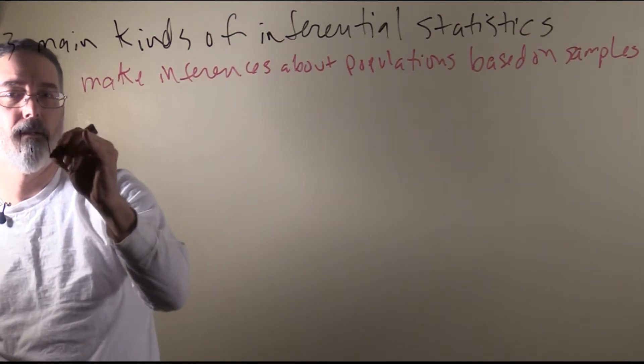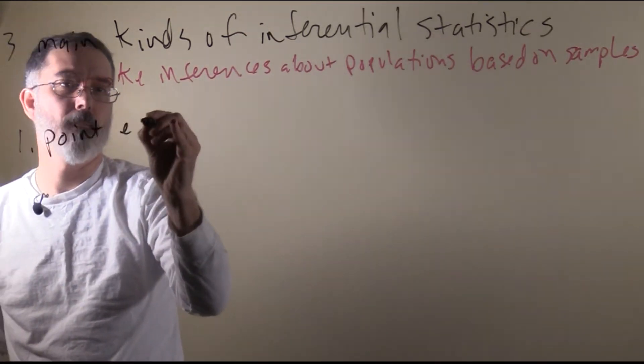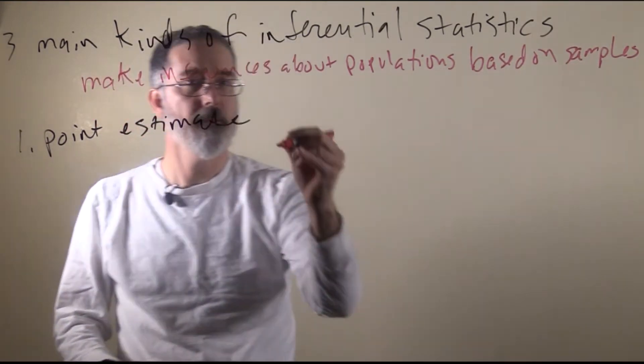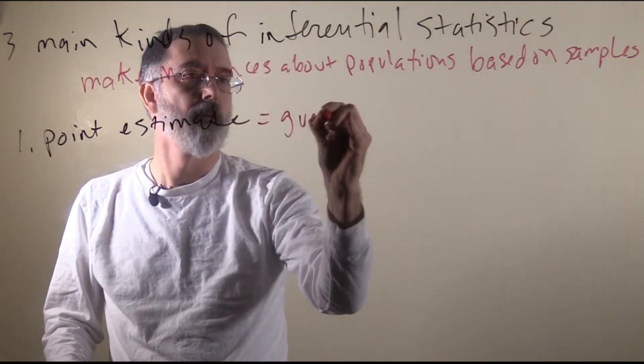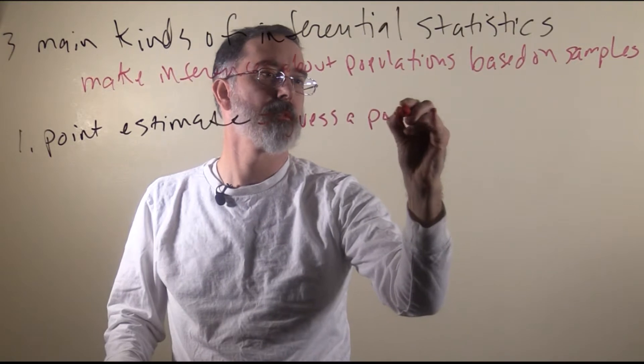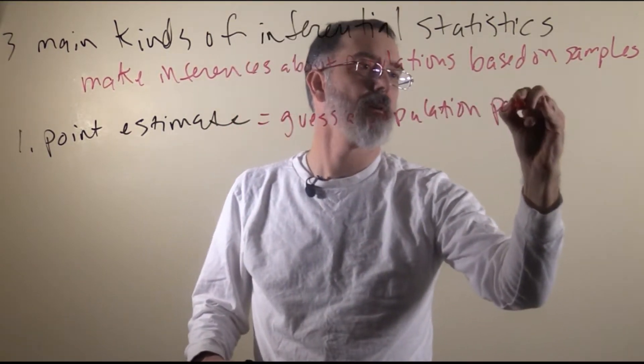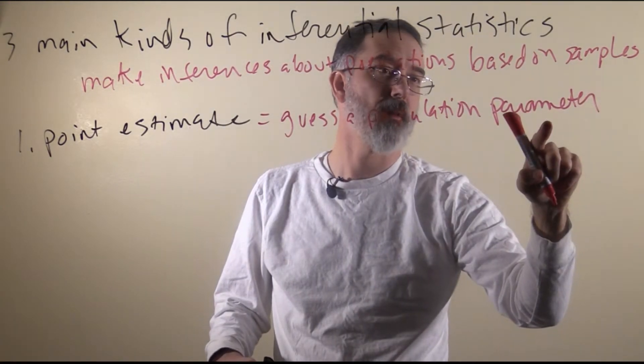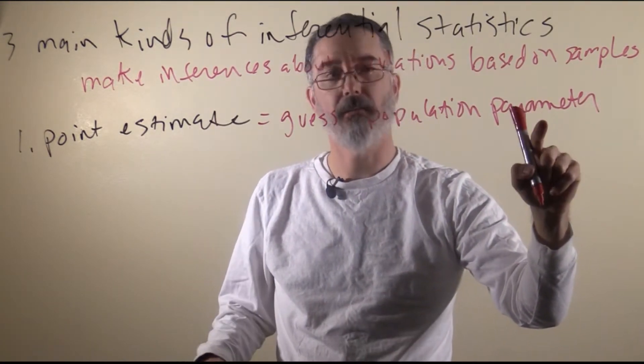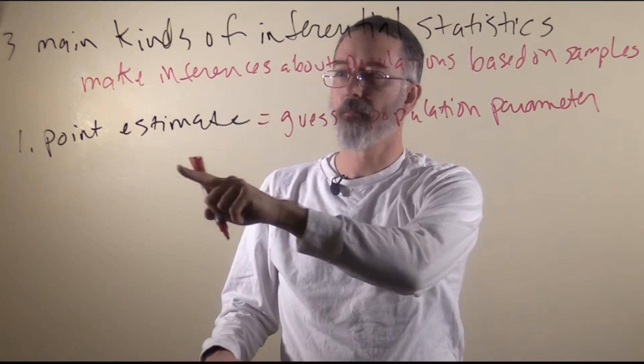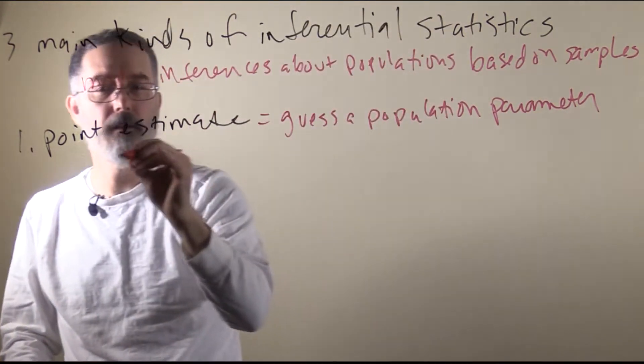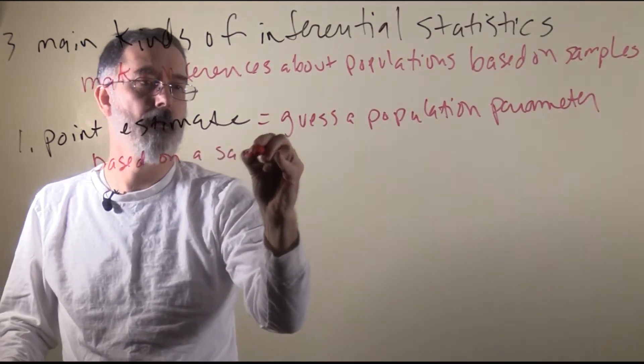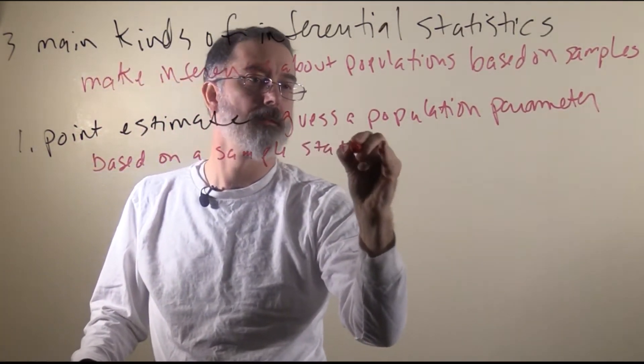The first kind of inferential statistic I want to talk about is called a point estimate. For these, you guess a population parameter. Remember, these are just descriptive statistics of populations, means, standard deviations, things like that. For a point estimate, you guess a population parameter based on a sample statistic.